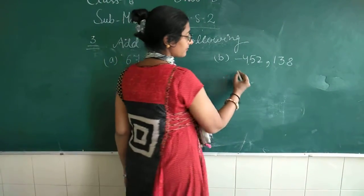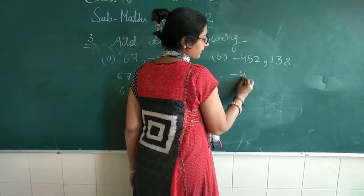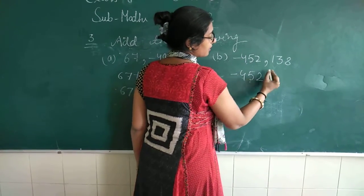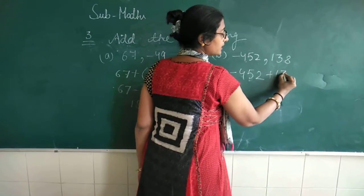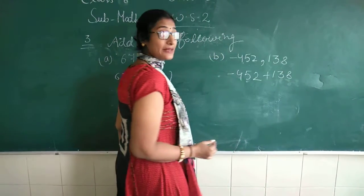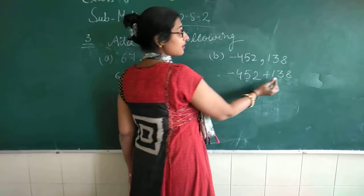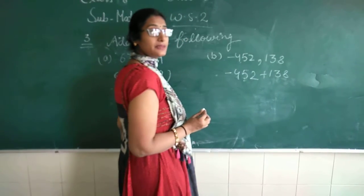Next is minus 452. Add ka sign, plus ka. 138. Same as before. 452 minus ka, 138 plus ka. Plus, minus, minus.